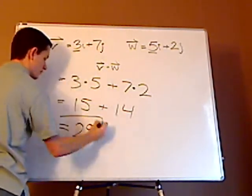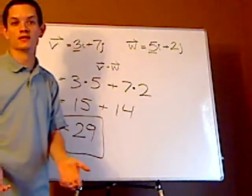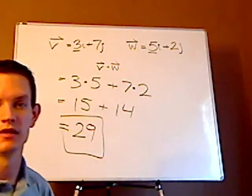And the dot product is always a scalar, meaning it's always a number. And that's it. Thank you.